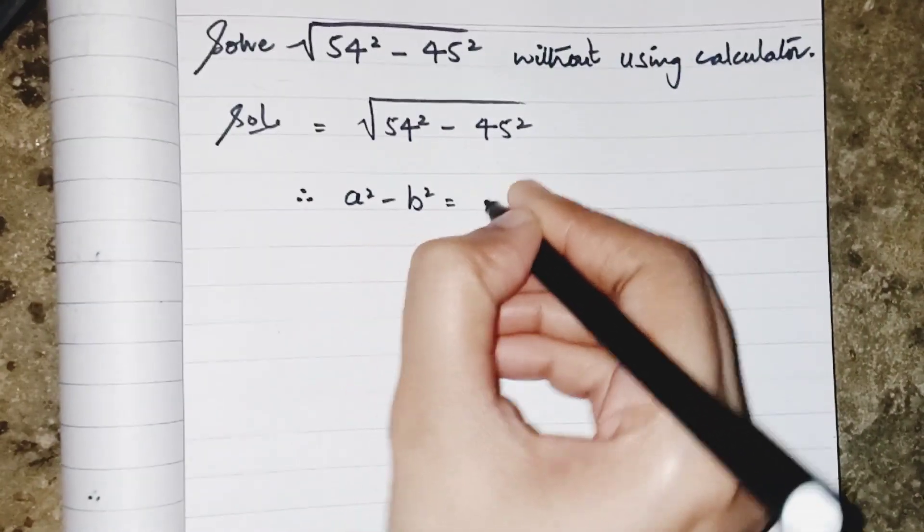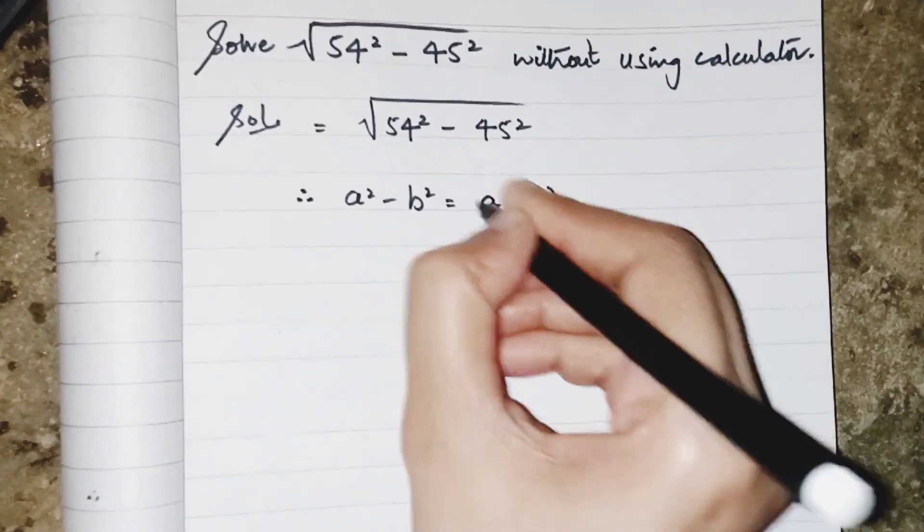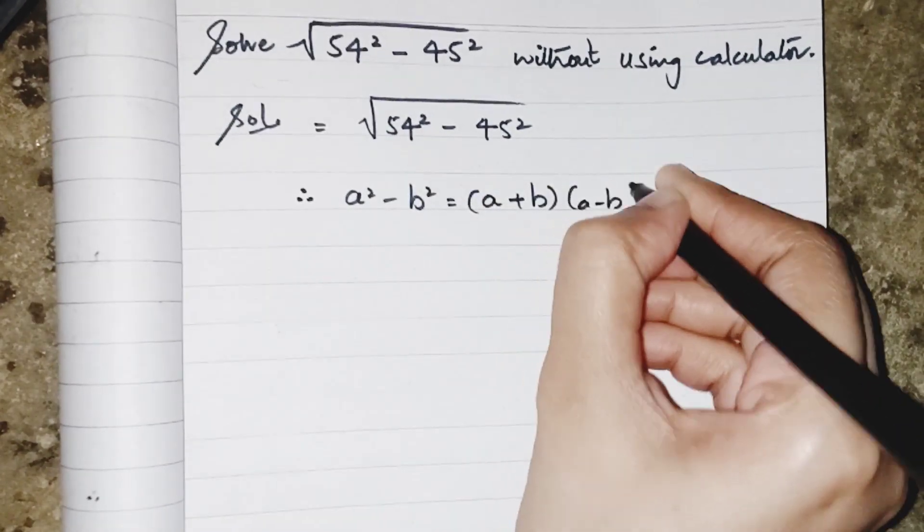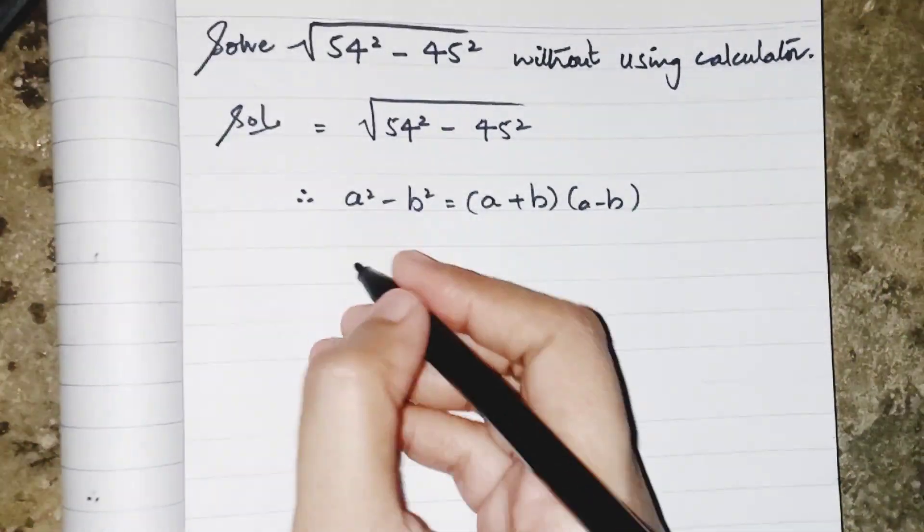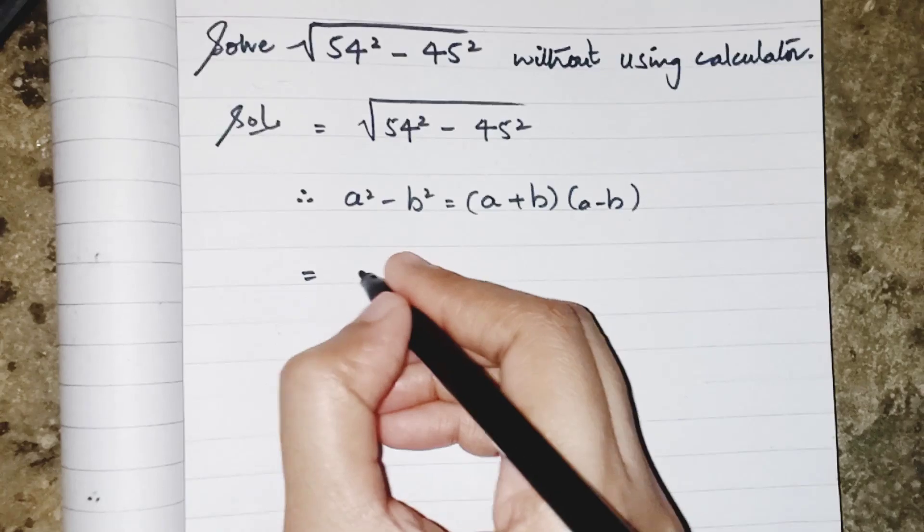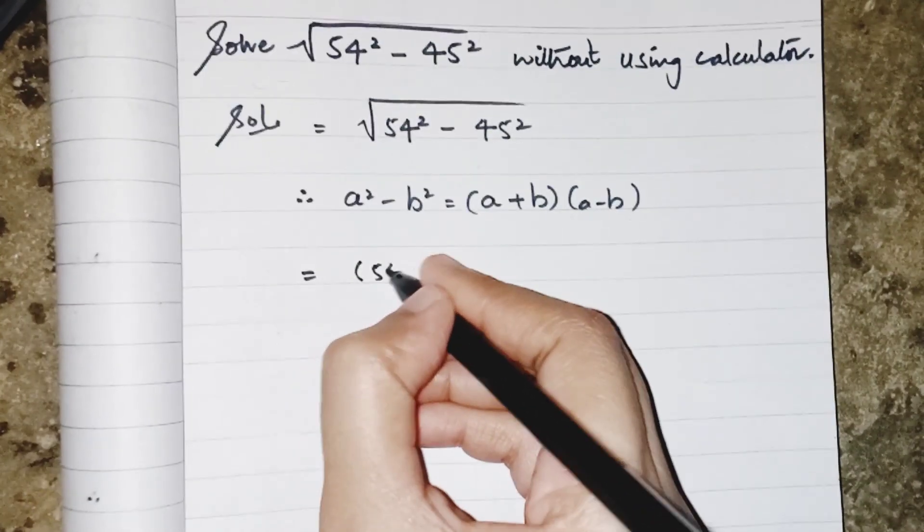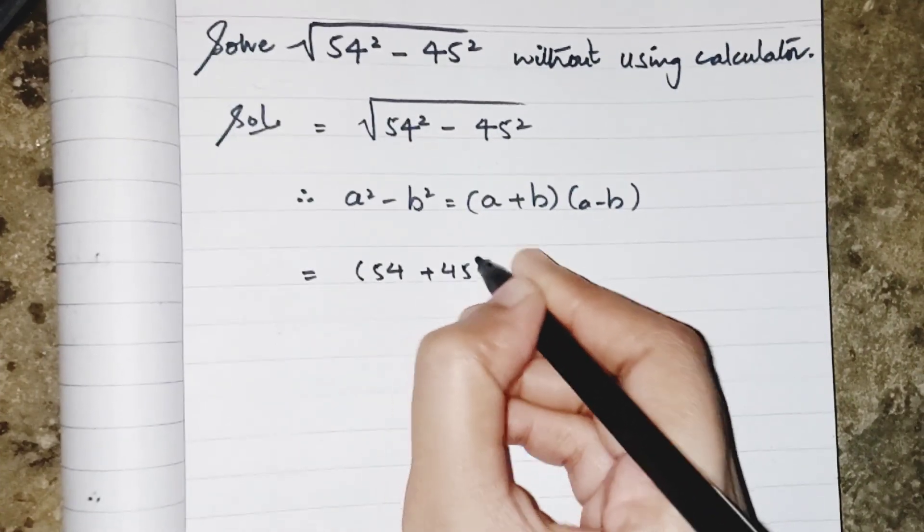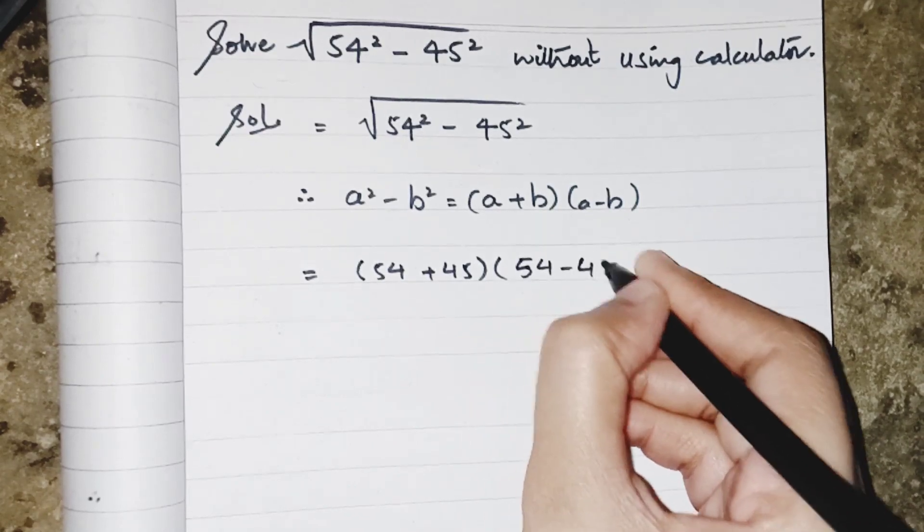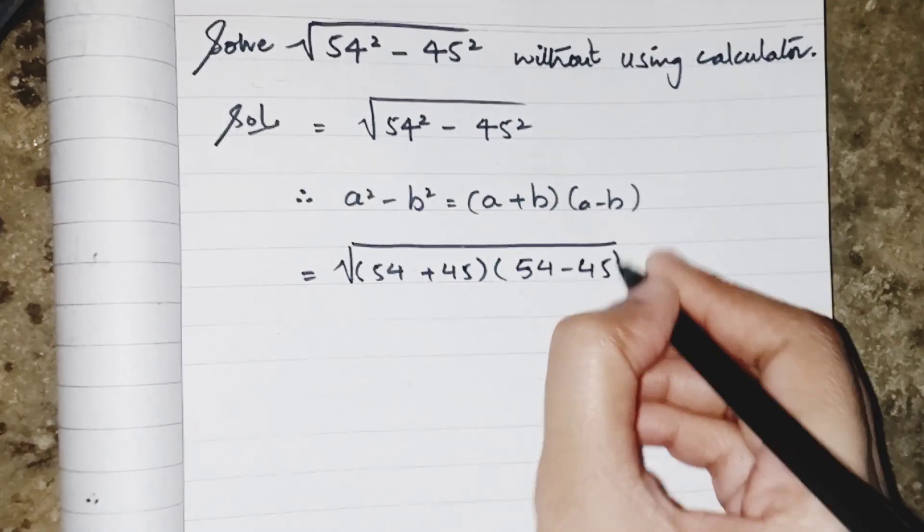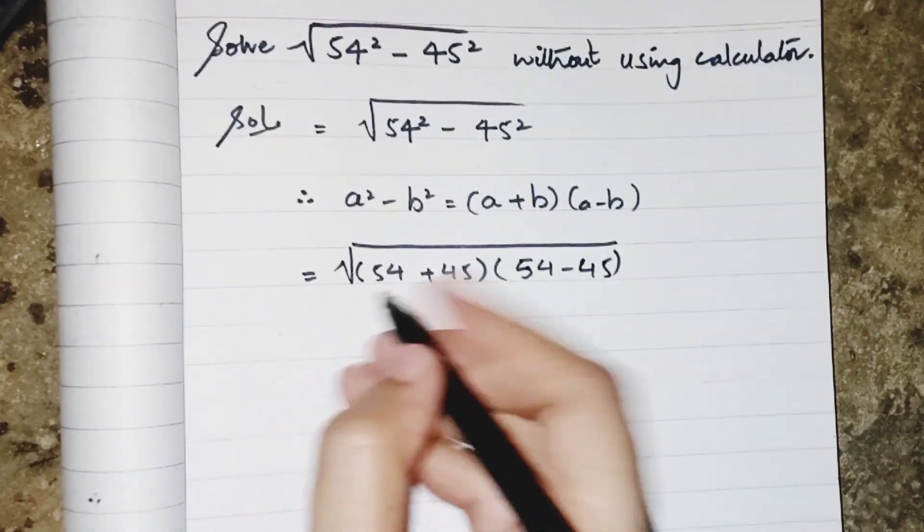square minus b square, which equals a plus b and a minus b, where I have a as 54 and b as 45. So simply putting the values: 54 plus 45, 54 minus 45 inside the root.